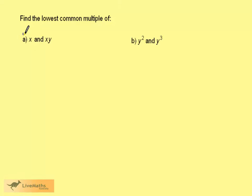We want to find the lowest common multiple of x and xy. x could be written as 1 times x. xy can be written as 1 times x times y.